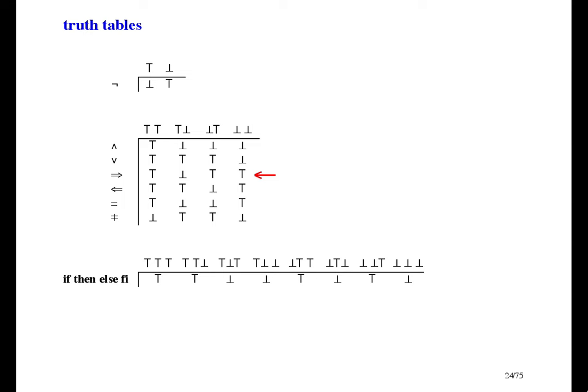Implication is the ordering operator — it means lower than or equal to. The first entry says top is lower than or equal to top, because they're equal. The next entry says that top isn't lower than or equal to bottom. Bottom is lower than or equal to top. And last, bottom is lower than or equal to itself. If I'm saying true and false, I could call this operator falser than or equal to. On the next line we have reverse implication, which means higher than or equal to, or if you prefer, truer than or equal to.